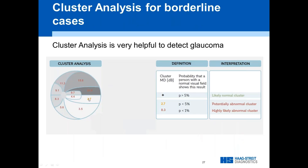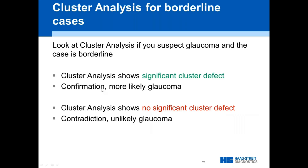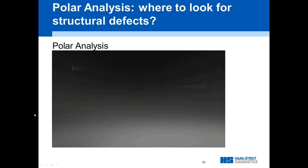In the latest software version, orange means potentially abnormal and red means highly likely abnormal — two degrees of probability, as with a probability plot. If you suspect glaucoma and aren't sure, look at the cluster analysis — if it shows something, you can be much more sure it's glaucoma. If it doesn't show anything, that's a contradiction. There is also a cluster trend analysis which is really helpful too.